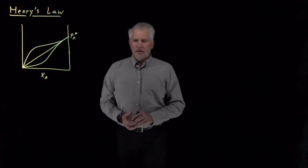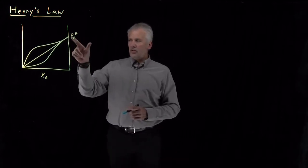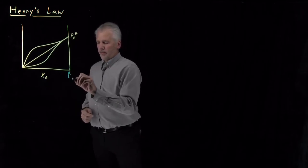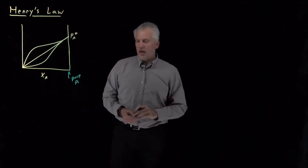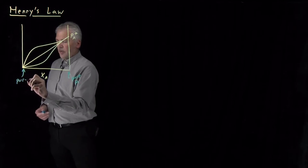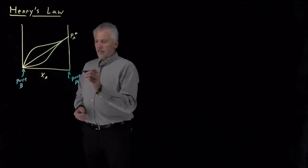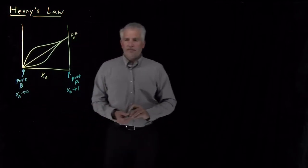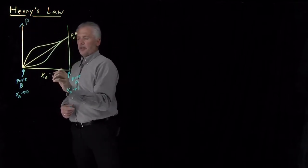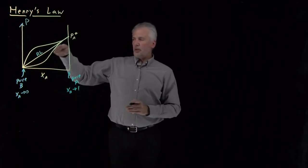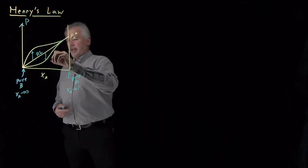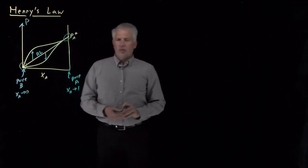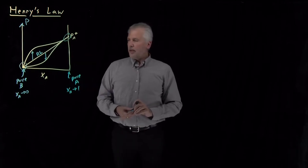Let's continue our discussion of ideal and non-ideal solutions, and in particular look more closely at what happens in the limiting cases on this graph — either when the mole fraction approaches one and we have something verging on pure A, or when the mole fraction approaches zero with nearly pure B solvent. This is a pressure-composition diagram; the straight line is Raoult's law, telling us pressure goes up linearly with mole fraction. Systems may deviate positively or negatively from Raoult's law for non-ideal solutions.